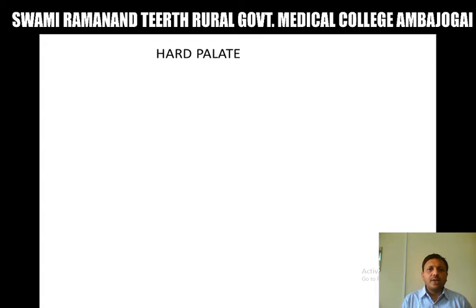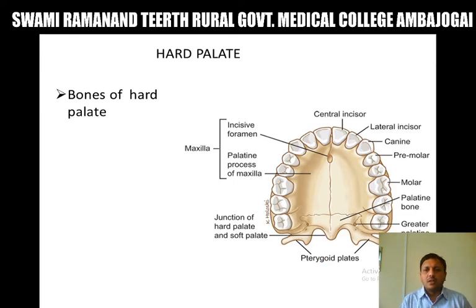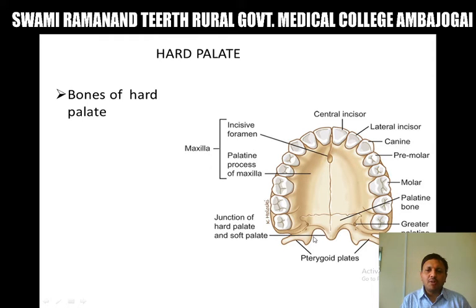First we will go for the hard palate. Bones forming the hard palate are the palatine process of the maxilla and the horizontal plate of the palatine bone. In the midline along the anterior aspect, there is the incisive foramina. Along the posterolateral aspect, there is the greater palatine foramina and lesser palatine foramina. Along the posterior border, there is a spinal projection known as the posterior nasal spine.